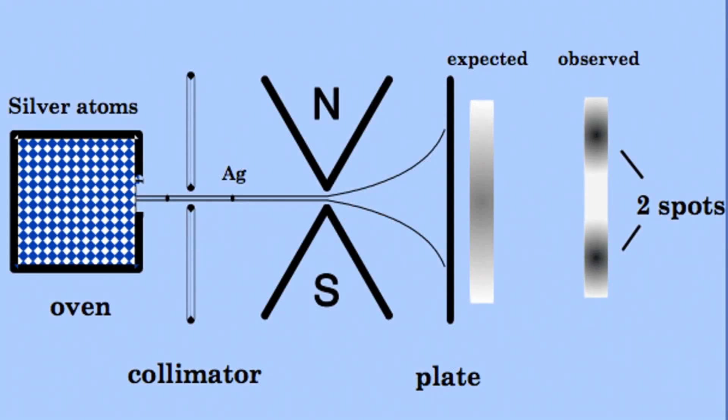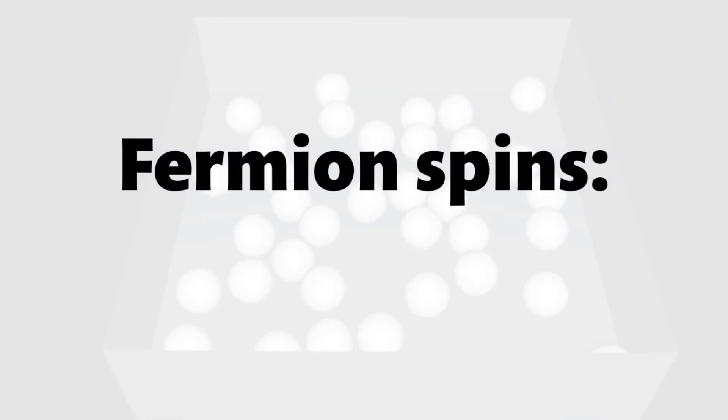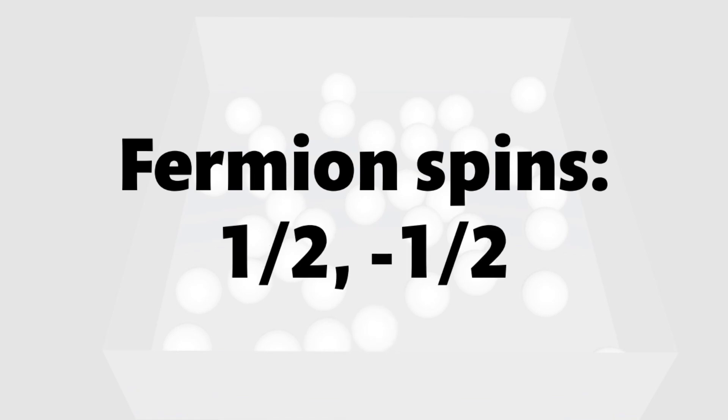However, the atoms instead split into two distinct groups, one on top and one on the bottom. The two groups represented the two spin directions that the fermions in the atoms had, positive one-half and negative one-half.